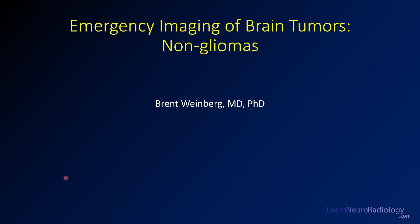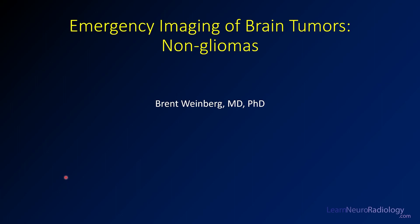We're going to focus on CT findings and how to hone your differential when you see these at the time of presentation. We talked a lot about primary brain tumors in the other videos, but there are a number of other brain tumors or tumors in the calvarium that you can see. We're going to cover meningiomas, metastatic disease, and lymphoma — these are pretty commonly encountered in major hospitals. Calvarial tumors have a special differential, so we'll take a look at those as well.